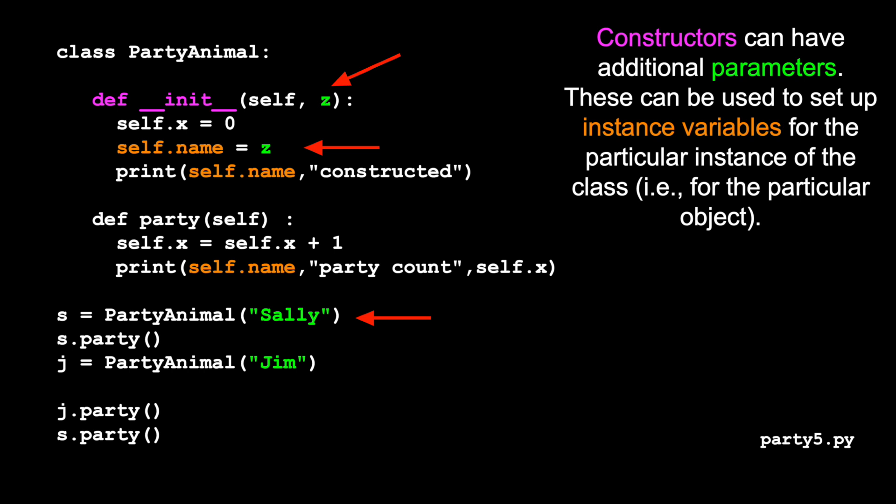And so then we have this, and that object is now constructed and then we put it in the variable s. And then we call the party method on that and we construct a different one. And so this time it calls, and z is Jim, and we basically have another copy of this.